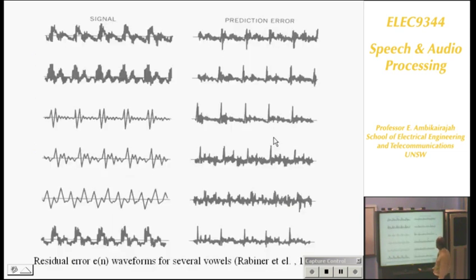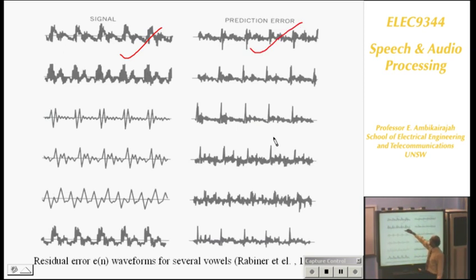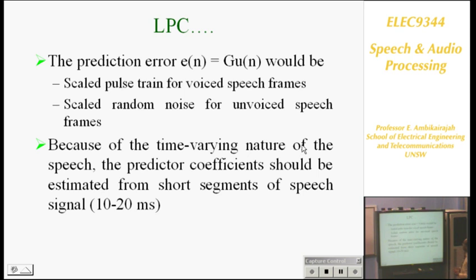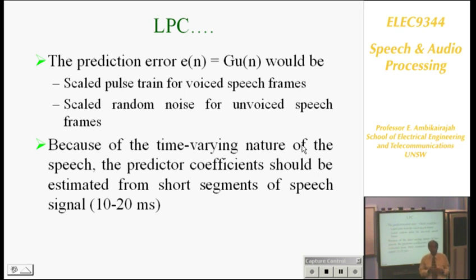More examples. You can see here the speech signal and the prediction error. Here's the speech signal and the prediction error — you do a good job. You can see the prediction is pretty good; that part coincides with that part exactly. It works for both voiced and unvoiced sound. Now, you have to calculate this filter coefficient every 10 milliseconds. We want to look at how we calculate this filter coefficient.